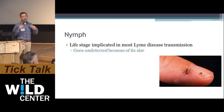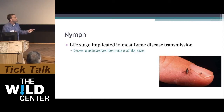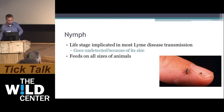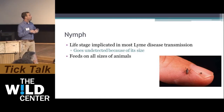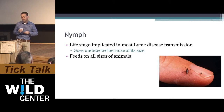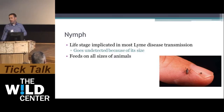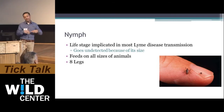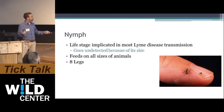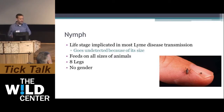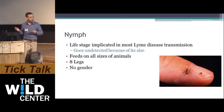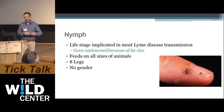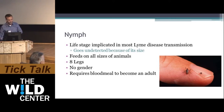The nymphal stage is implicated in most Lyme disease transmission in the United States. It really goes undetected because of its small size. The nymph can feed on a wide variety of animals, but they prefer smaller mammals like mice and shrews. They have eight legs — so when the larva molts, it gains a set of legs, like the spider. Nymphs actually have no gender.